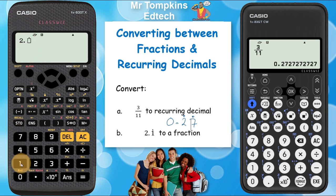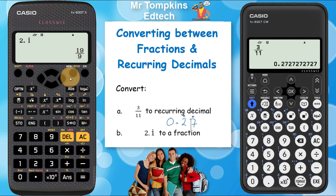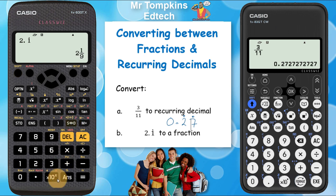Type in the one and press equals — the calculator immediately converts it into an improper fraction: 19 over 9. If you want it as a mixed number, press shift and then the symbolic-to-decimal button, and it rewrites it as 2 and 1 ninth.